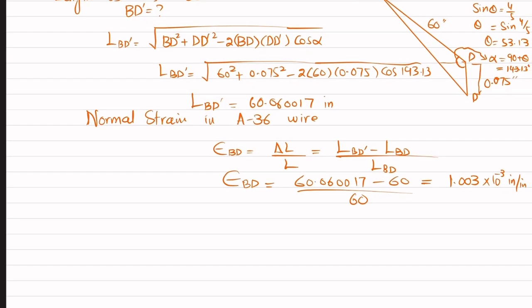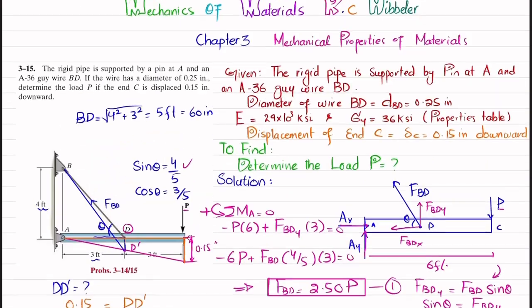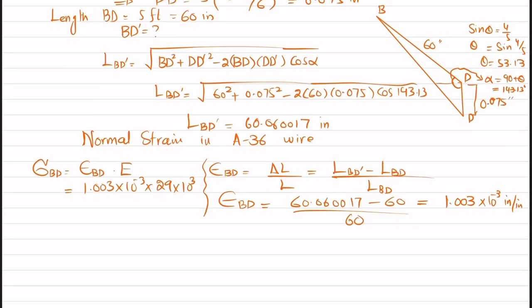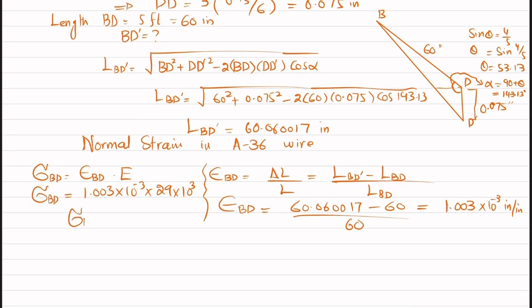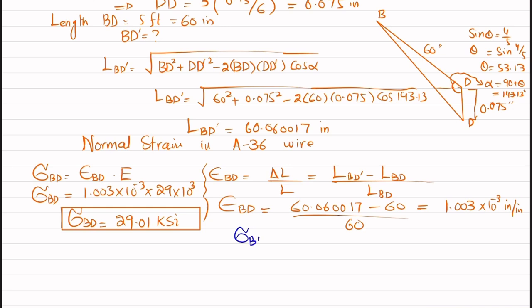The stress in wire BD is: σ_BD = ε × E = 1.003 × 10⁻³ × 29 × 10³ ksi = 29.01 ksi. From the material property table, the yield stress of A36 steel is 36 ksi. Since σ_BD = 29.01 ksi < σ_yield = 36 ksi, the wire is within the elastic range and the result is valid.